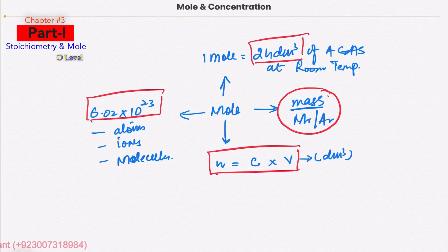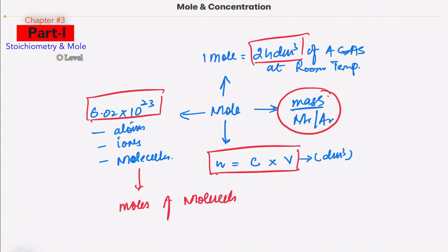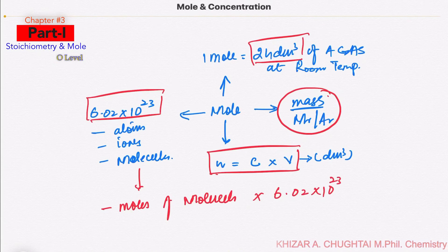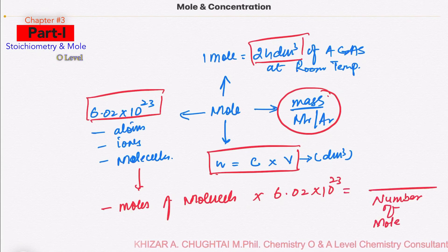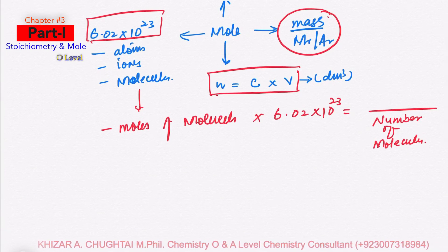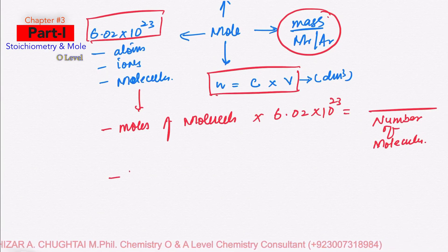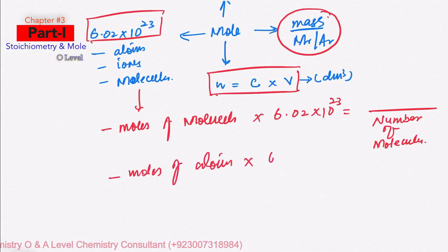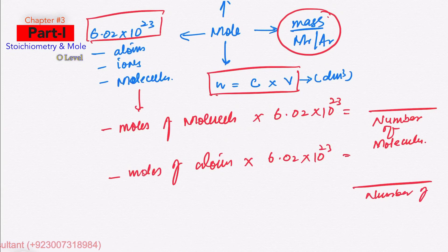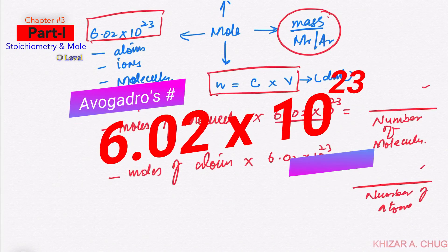When we find the number of atoms, ions, or molecules, we first find the moles of molecules or moles of atoms, then multiply by Avogadro's number. To find the number of atoms: first find the number of moles of atoms, then multiply by 6.02 × 10²³. Whenever you find the number of atoms, ions, or molecules in chemistry calculations, you must use Avogadro's number.